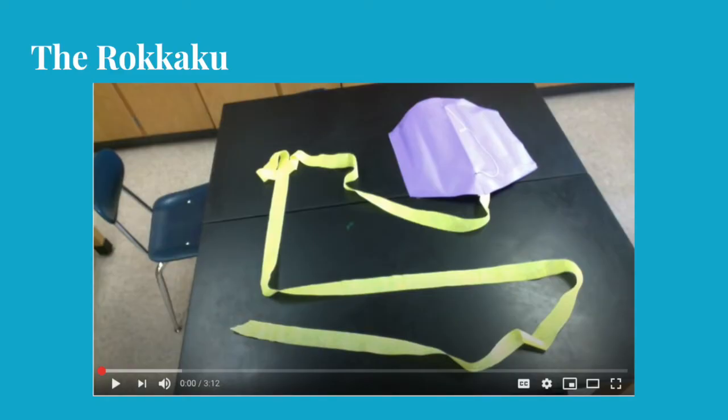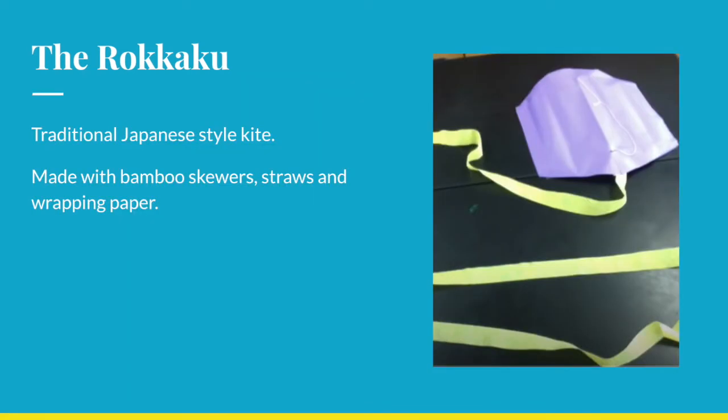The last type of kite we'll share with you is called a Rokkaku kite. It is a traditional Japanese kite that is supposed to emulate a dragon with a long streamer as a tail. The materials for this kite are very similar to the diamond kite as they are both built on a frame of bamboo skewers and straws using wrapping paper or butcher paper.